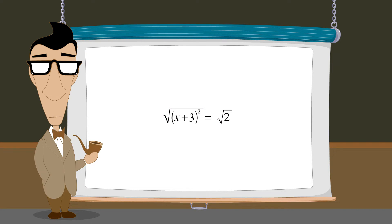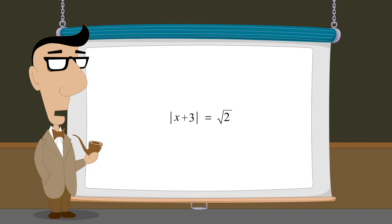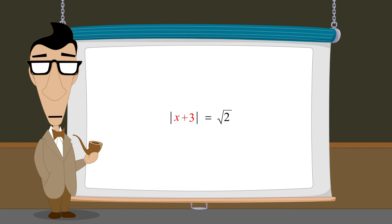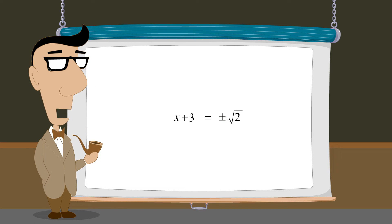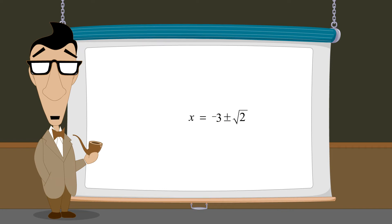Since the square root of the square of an expression is the same as the absolute value of that expression, the square root in square can be replaced with the absolute value operation. And since the absolute value of x plus 3 is equal to the square root of 2, the value of x plus 3 can be equal to either the positive or negative square root of 2. To solve for x, we then move 3 to the right side by subtracting 3 from both sides, giving us the values of x that are the solutions to the quadratic equation.